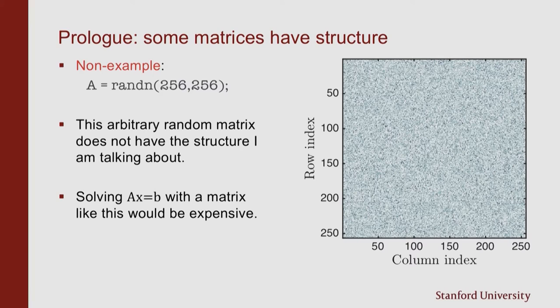So here's my prologue. Some matrices have structure, and of course I thought the best way to demonstrate this is to show you a non-example. This is just a random matrix I've generated and it has no structure, at least not the type of structure that I care about. So what that means for me is that if I am given this matrix there's not much I can do with it. If I want to solve a system, I'm going to have to do a regular old order n cubed algorithm to solve.